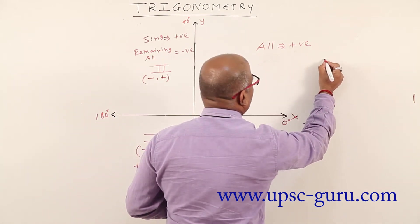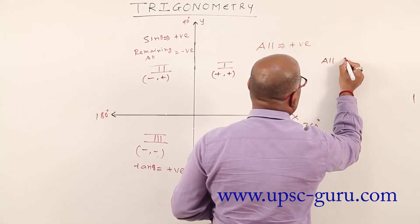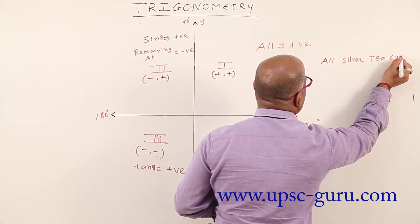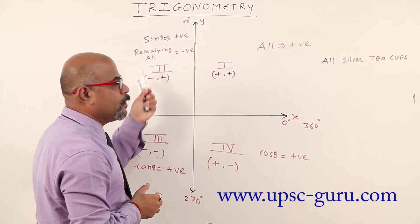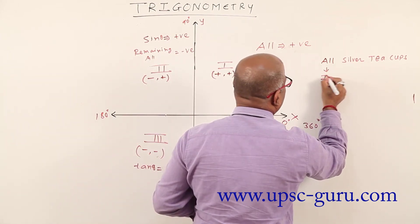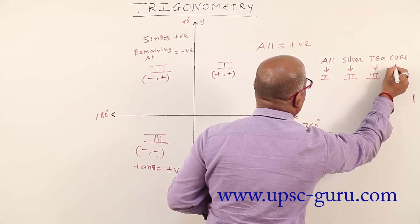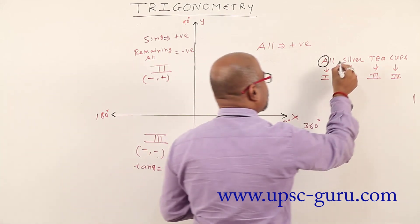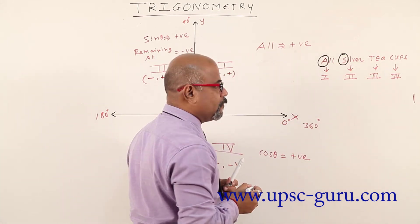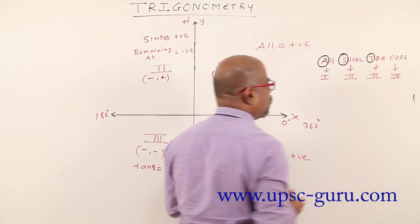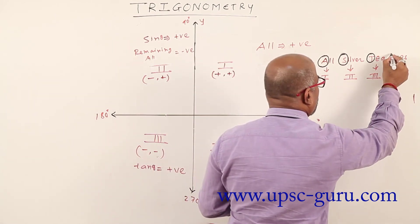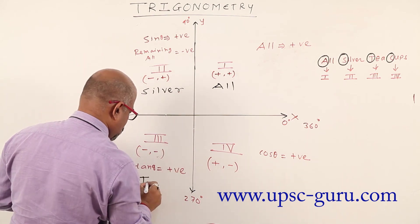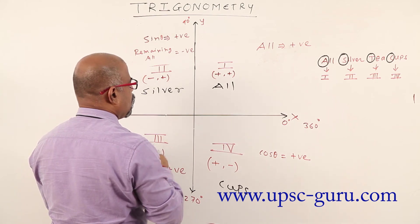Here is a shortcut to remember this. In the first quadrant we say 'All,' second quadrant 'Silver,' third quadrant 'Tea,' fourth quadrant 'Cups' — remember as 'All Silver Teacups.' A means all are positive, S means sine and cosec positive, T means tan and cot are positive, and C means cos and sec are positive.